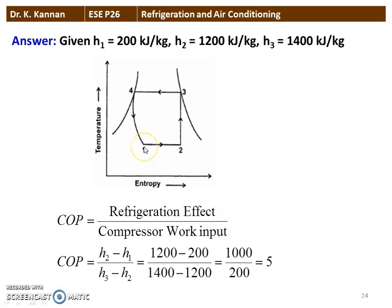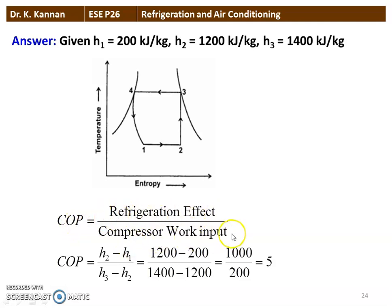H1 (enthalpy at entry of the evaporator or exit of the condenser): H4 = H1 = 200 kJ/kg. H2 (enthalpy at entry of the compressor) = 1200 kJ/kg. H3 (enthalpy at exit of the compressor) = 1400 kJ/kg. COP = refrigeration effect / compressor work input = (H2 − H1) / (H3 − H2) = (1200 − 200) / (1400 − 1200) = 1000 / 200 = 5.